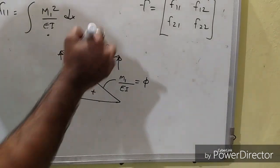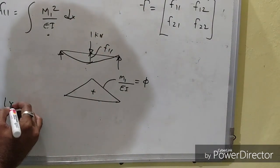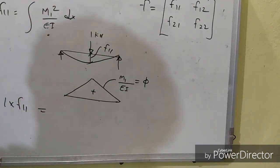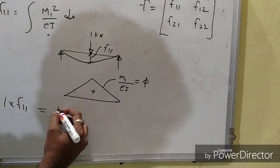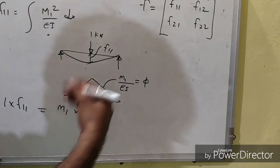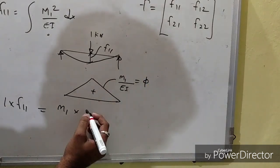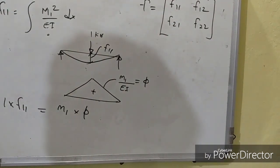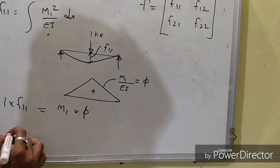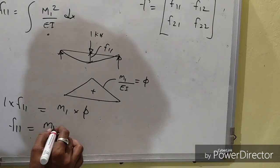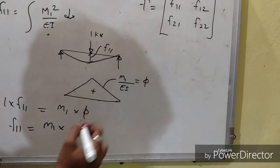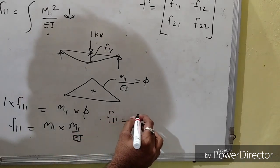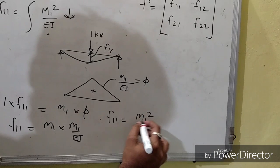We know that external work done — force into displacement — equals internal work done: internal force into internal displacement. The internal displacement is taken as the curvature, which is the curve of the structure. Therefore, F11 equals M1 multiplied by phi, where phi equals M1 divided by EI. So F11 equals M1 squared divided by EI.